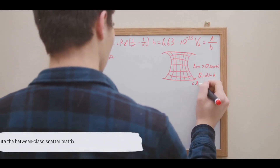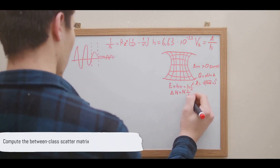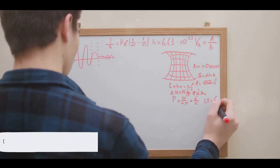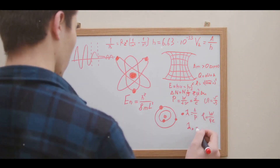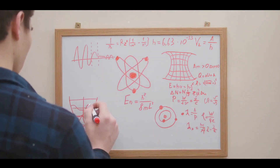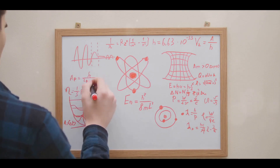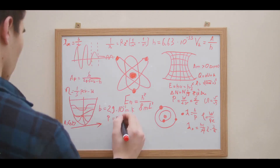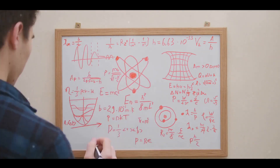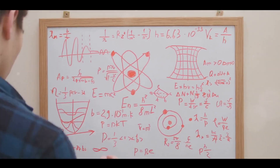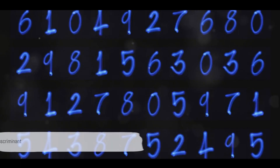After that, calculate the between-class scatter matrix, which measures the variance between the different class means. It's a measure of how different the average apple is from the average orange.